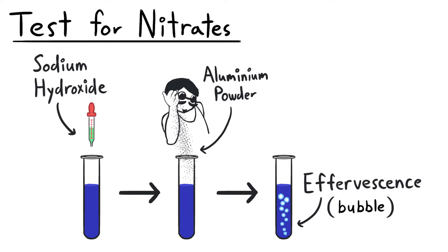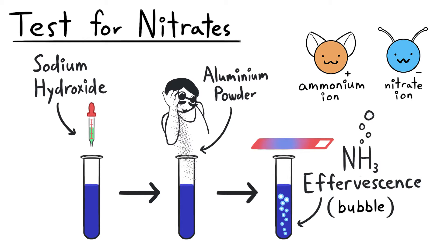The gas formations are tested with red litmus paper, which turns blue, proving or indicating to us that it is the alkaline ammonia gas. A quick side note, in examinations, students often get mixed up whether this test is meant for nitrate ions or ammonium ions.